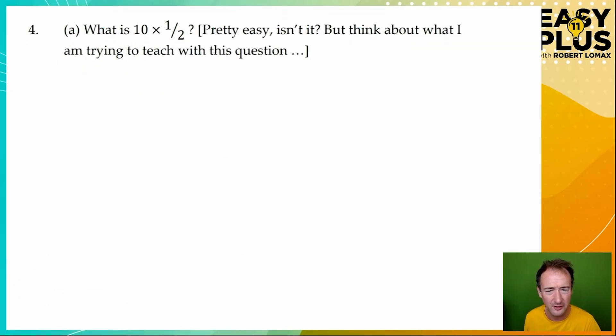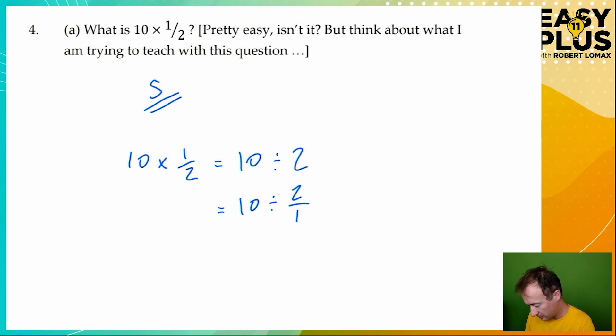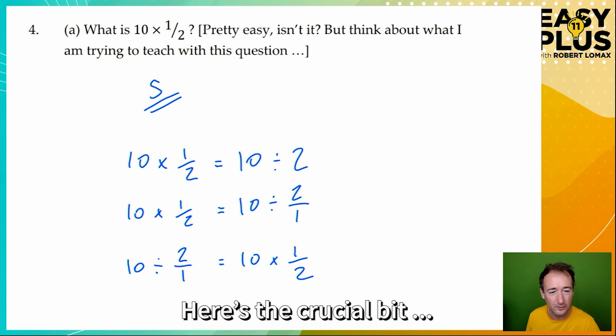Now here we have a spectacularly easy question. So what's ten times a half? Oh well, half of ten is five, of course. We just need to write the answer down, right? But why is this question here? What am I trying to show you? Let's think about this a little bit more. What we've actually done is ten divided by two. So ten times a half, or half times ten, is ten divided by two. Now remember that just as five is five divided into one part, two can also be written as two over one. Two divided into one piece. So ten times a half equals ten divided by two over one. Let's write that the other way around.